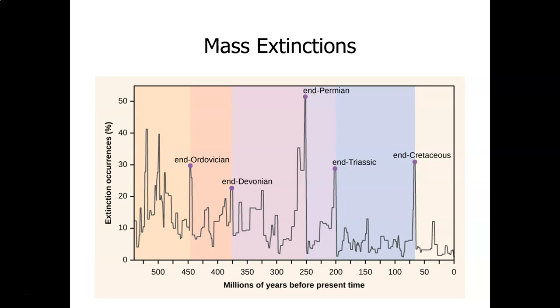These are mass extinction events, based on the percentage of extinction, the percentage of organisms that went extinct, and it shows the millions of years before the present time. We had the end Triassic around 200 million years ago and about 75, 80 million years ago was the end Cretaceous.